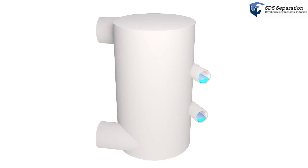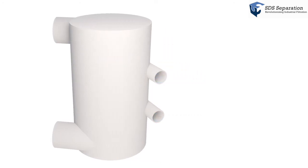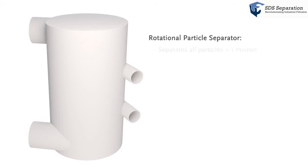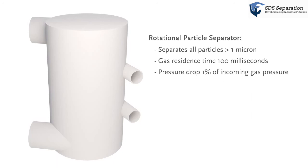The rotational particle separator typically removes all particles with diameters of one micrometer and larger. This happens in about a hundred milliseconds, making the rotational particle separator a compact device. The pressure drop is around 1% of the incoming gas pressure.